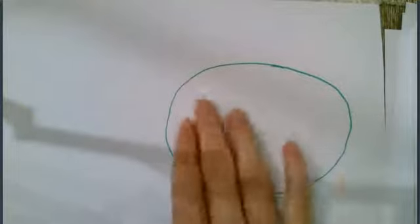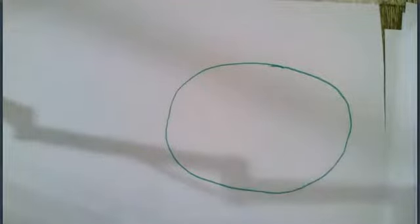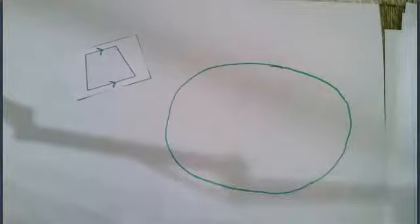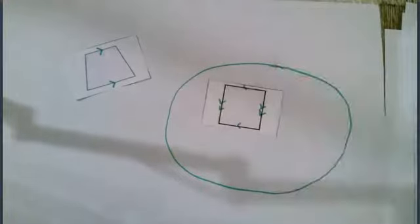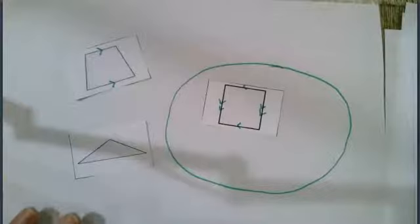I'm going to place shapes in my oval and shapes outside my oval and you have to decide on what the rule is to be inside the oval. Can you guess the rule yet?